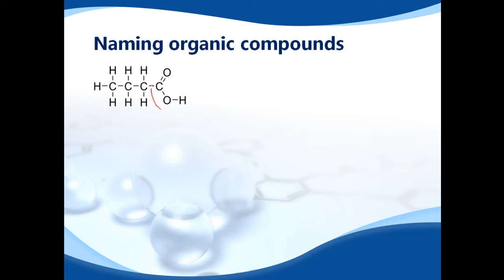The functional group for this molecule is here. Sometimes you'll see that written as COOH. That is a carboxylic acid. And you count the number of carbons. One, two, three, four. It becomes butanoic acid.